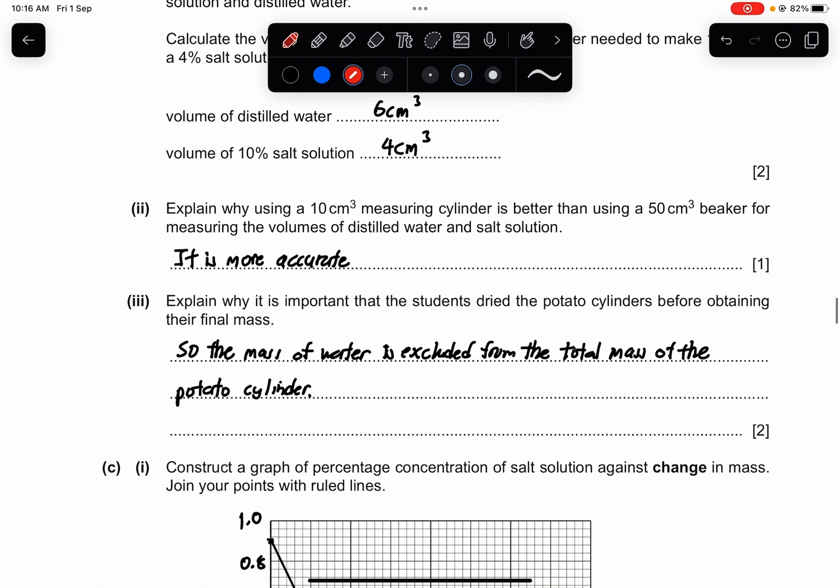Part 2. Explain why using a 10 cm³ measuring cylinder is better than using a 50 cm³ beaker for measuring the volume of distilled water and salt solution. Why? Because it is more accurate when you can precisely measure the volume properly.